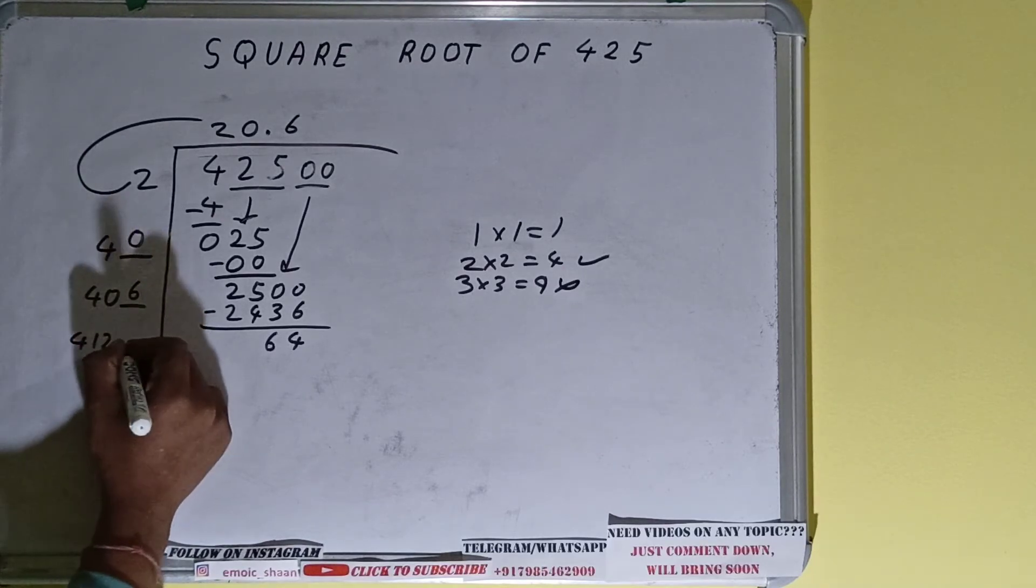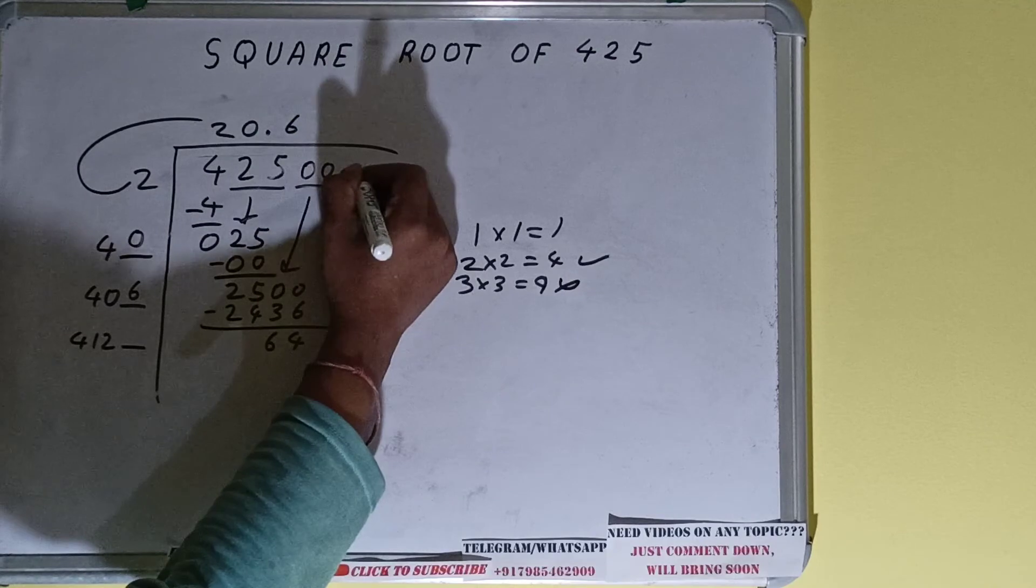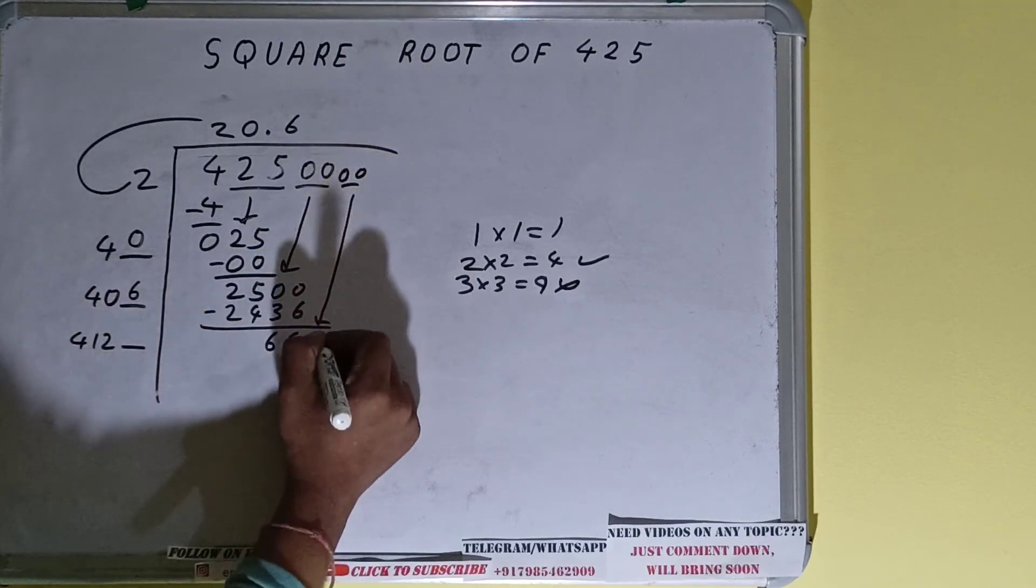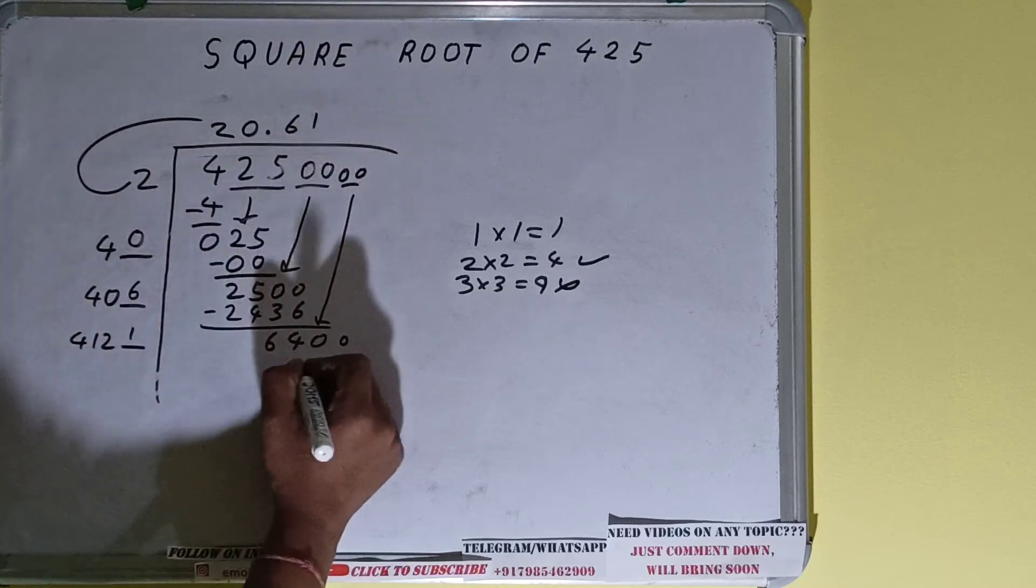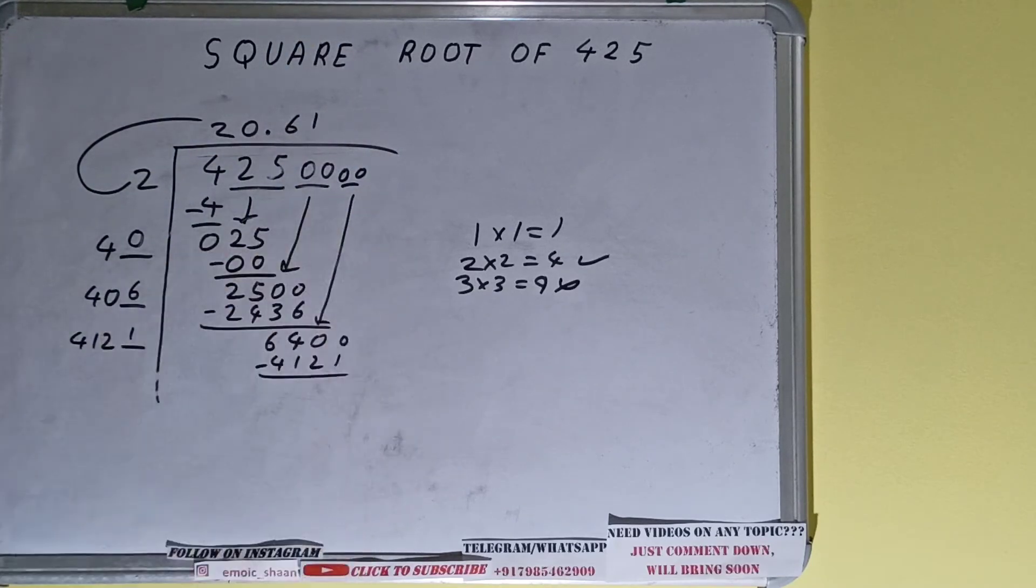412 and one digit extra. This number we need to make it big, so bring the next pair of zeros down and it will become 6400. We can try 1 time and it will be 4121, subtract it.